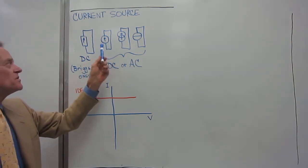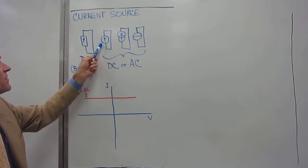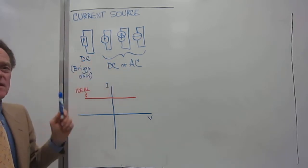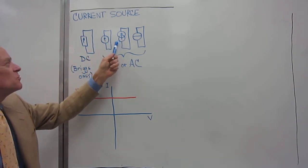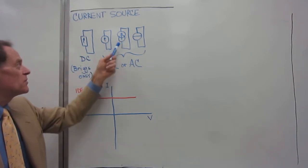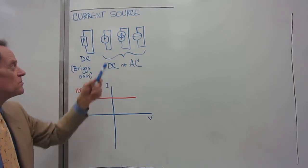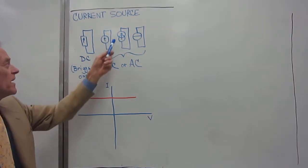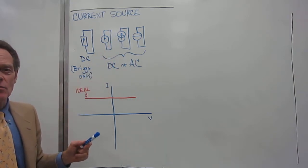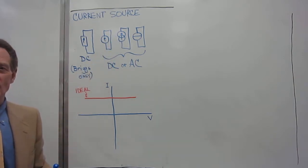The textbooks will typically use this symbol for either DC or AC. Sometimes you will see this kind of current source, which has basically two circles like that with an arrow in it, or an arrow possibly beside it, one or the other, but it has to show the direction of the current.